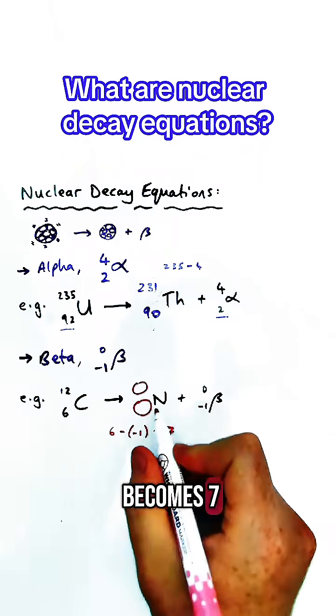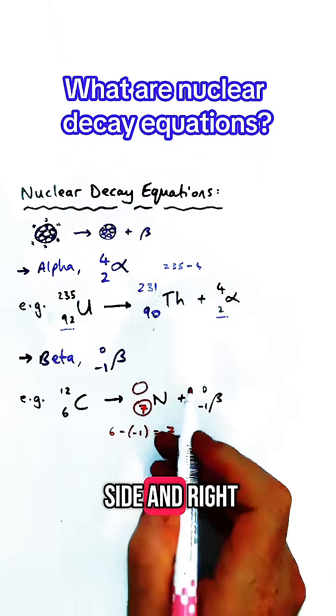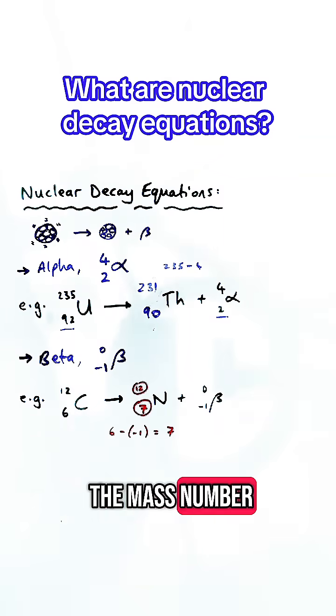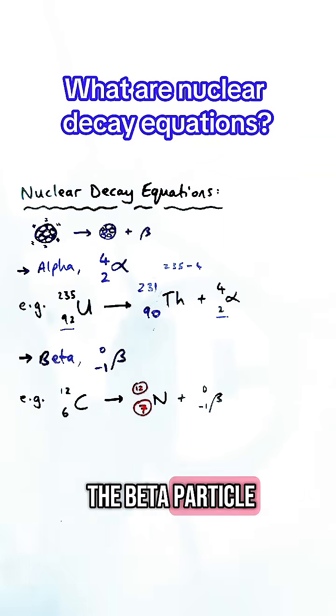So actually this becomes 7, and now it balances the left and right-hand side. The mass number doesn't change because there's no mass number in the beta particle, so it remains at 12.